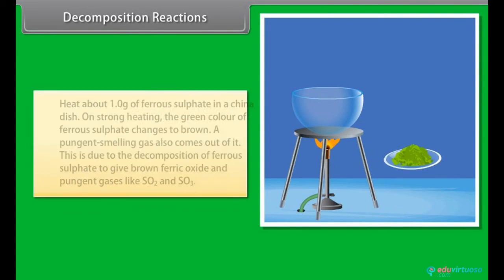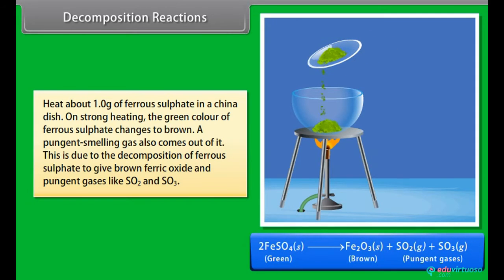Heat about 1.0 gram of ferrous sulphate in a china dish. On strong heating, the green colour of ferrous sulphate changes to brown. A pungent smelling gas also comes out of it. This is due to the decomposition of ferrous sulphate to give brown ferric oxide and pungent gases like SO2 and SO3.